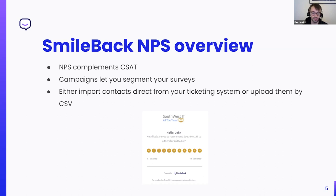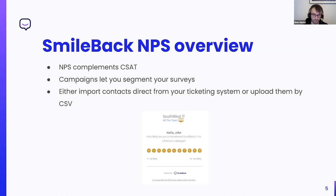We break things into campaigns. A campaign is a group of people — the audience — who will get the survey on a particular schedule. You might just have one campaign, but you can set up multiple. As for how you get people into the survey, you can either import them directly from your ticketing system or upload them by CSV. It's different from CSAT — it's not embedded inside your ticketing system and not automatically emailed each time you close a ticket, so you need to give us the list of contacts and tell us when to survey them.